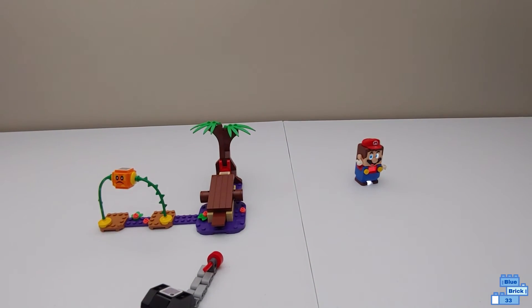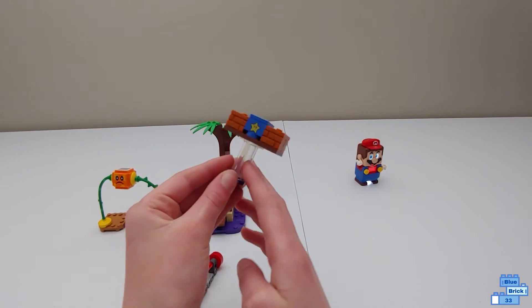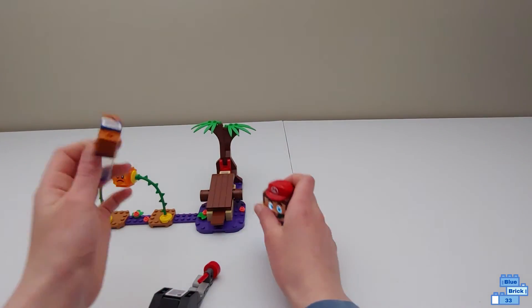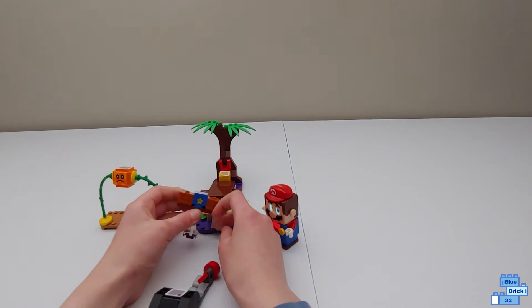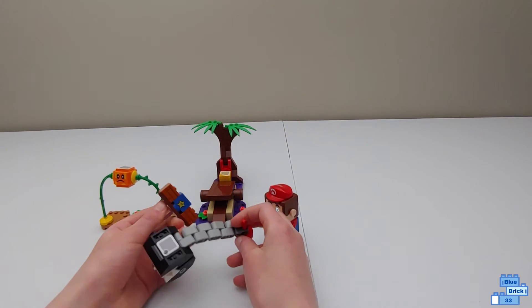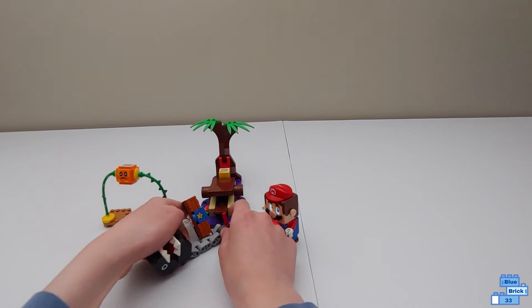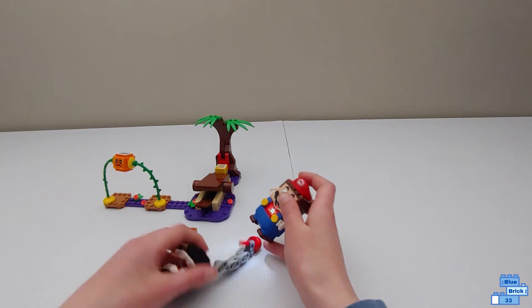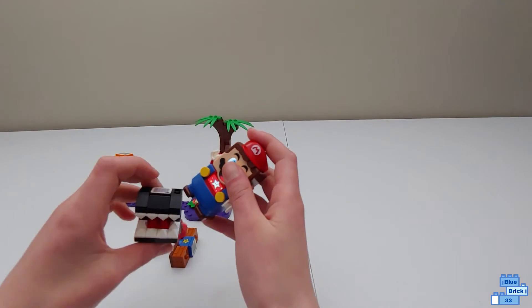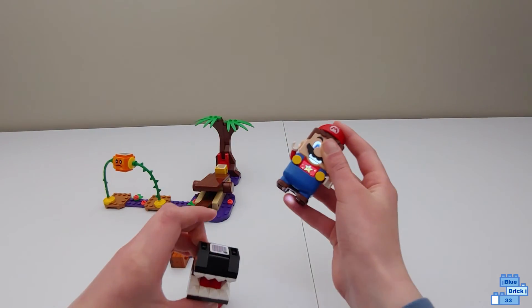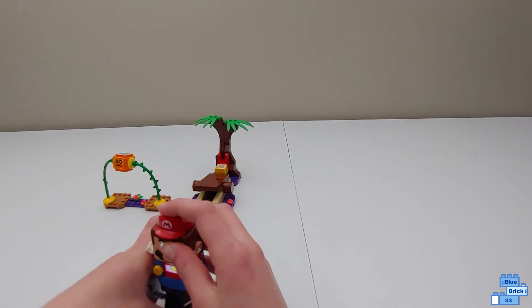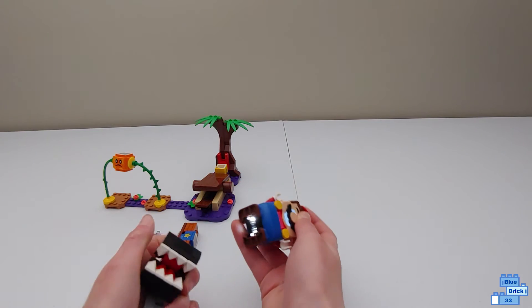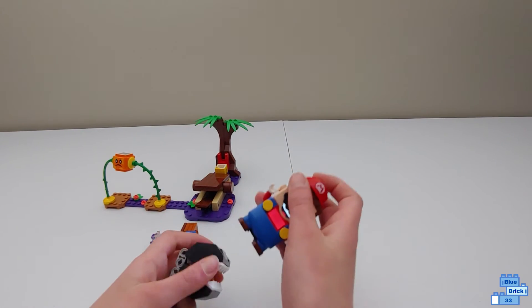Now here's a star block from Wiggler's Poison Swamp expansion set. This does not come in the set. This is the only way for me to actually be able to show what you get from Chain Chomp. So you go on the star block and then you hit a Chain Chomp's barcode. And now you can just hit it as many times as you want. You get a lot of coins, especially because you're in star power.